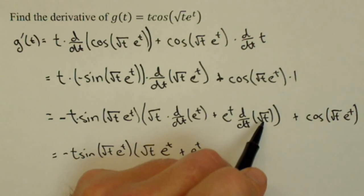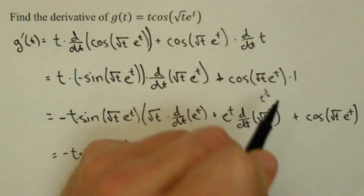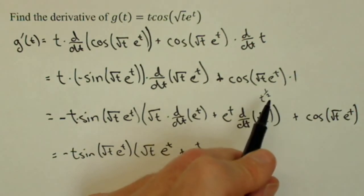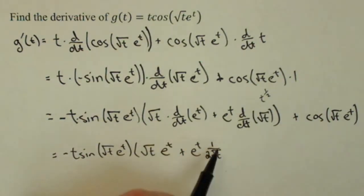The derivative of square root of t. Remember this is the same thing as t to the one half. So its derivative is one half t to the negative one half, or if we want we could write it as one over two square root of t. We'll let you double check that part.